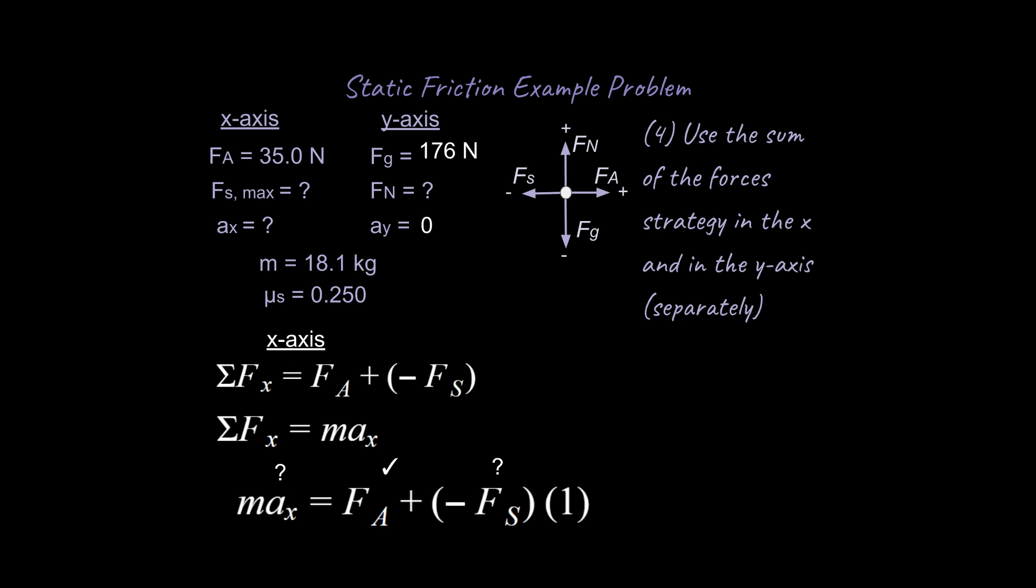Now at this point there are two unknowns. We don't know what our acceleration in the x is. It could be something or it could be nothing actually. We do know our fa. We don't know our fs. We have two unknowns so we're kind of stuck, but we just take it step by step by step and we're going to be fine. I'm going to label this as equation one so we can come back to equation one and you'll know what I'm talking about.